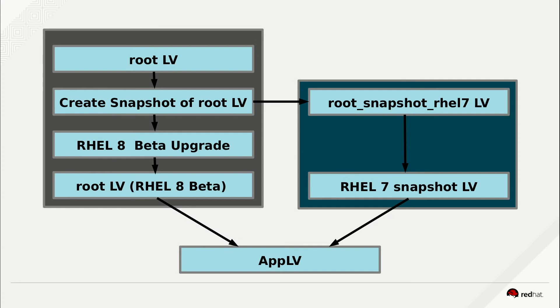One thing I want to note is that we are not creating a snapshot of the app LV. So whether we boot into RHEL 8 Beta or RHEL 7, it's going to mount the same app LV, and the data will be available in either case. And if we write data in RHEL 8 and then reboot into RHEL 7, that same data in the logical volume for app LV will still be available because it's outside of the root logical volume.